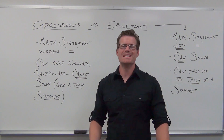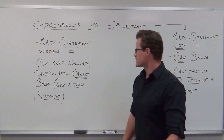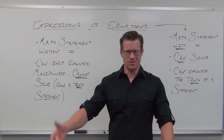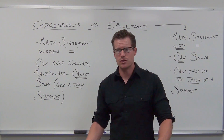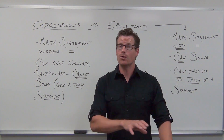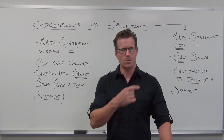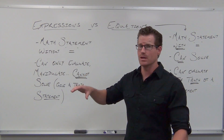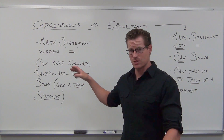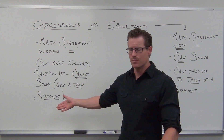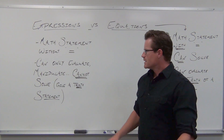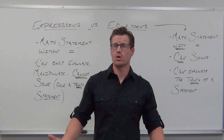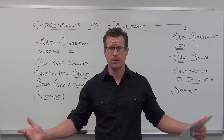Math expressions don't have equal signs, and that means a lot. Without an equal sign, you can only evaluate them or manipulate them. You can do things like plug numbers in — that's what evaluate means. Or you can factor, distribute, combine like terms. That's all great, but that's not solving. If you don't have an equal sign in your math statement, you do not have an equation — most likely you have an expression. We do have things called inequalities we'll get to later, but for now the big thing is: you can't solve expressions. You can't tell me whether they're true or not.